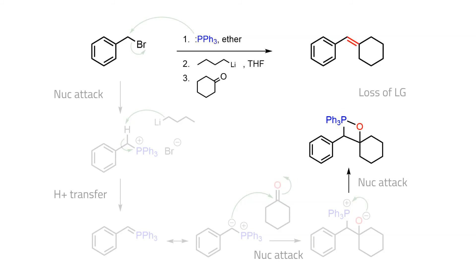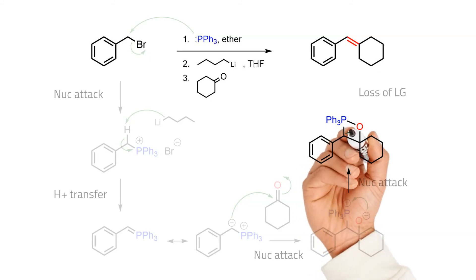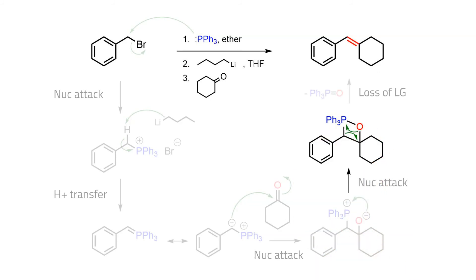The strained nature of the cycle causes it to open up, this time with the formation of a strong P-O double bond worth about 110 kcal per mole and a carbon-carbon double bond worth about 146 kcal per mole.